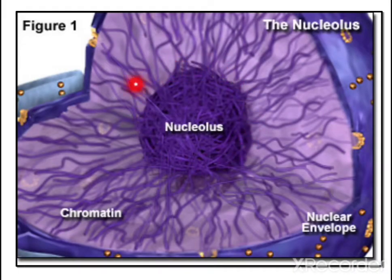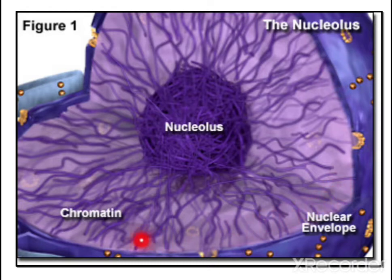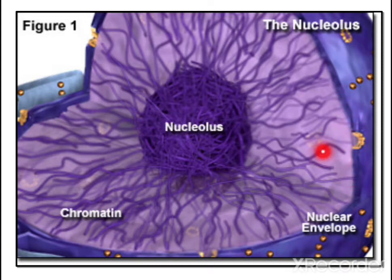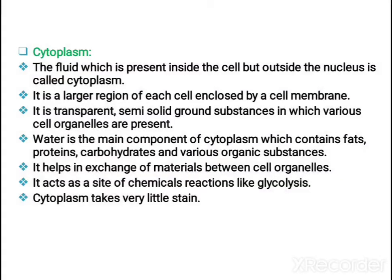In the diagram, you can see the nucleolus and the fiber-like structure that is chromatin. On the outside you can see the double-layered membrane — that is the nuclear envelope. The light purple-colored fluid-like structure is the nucleoplasm.